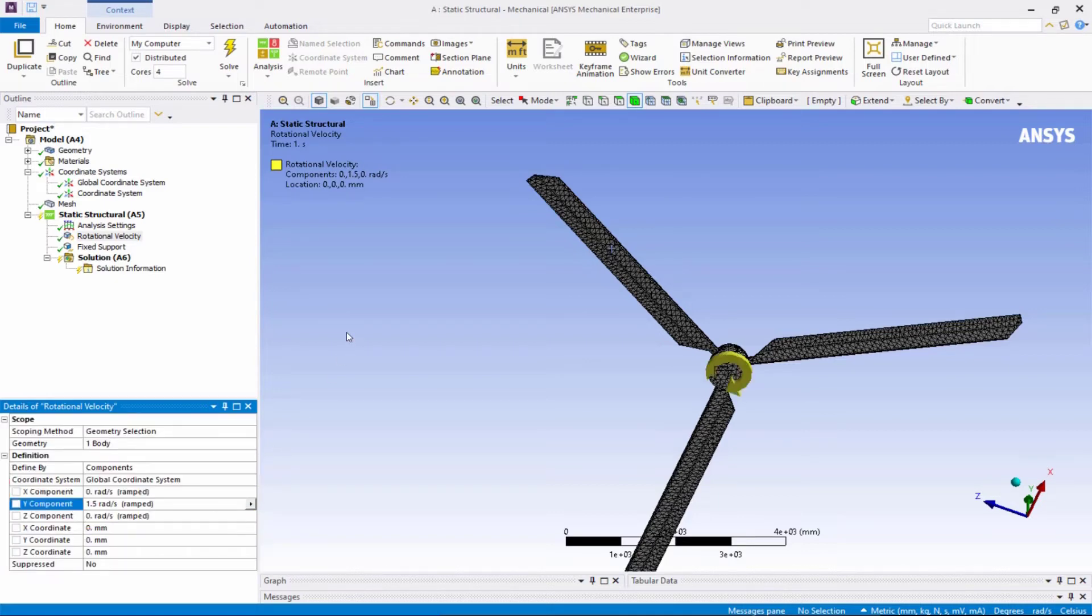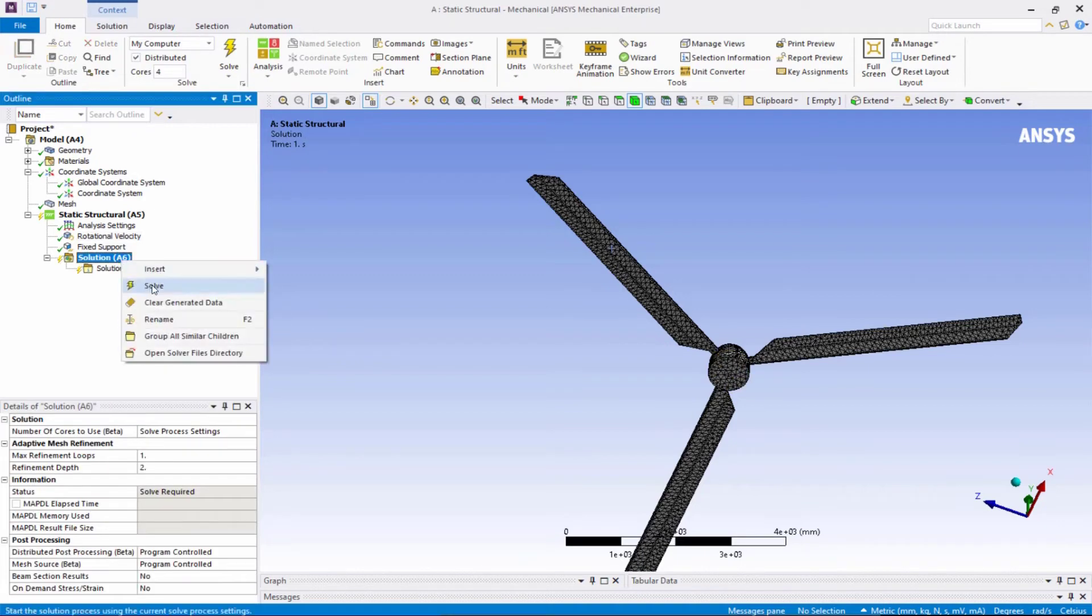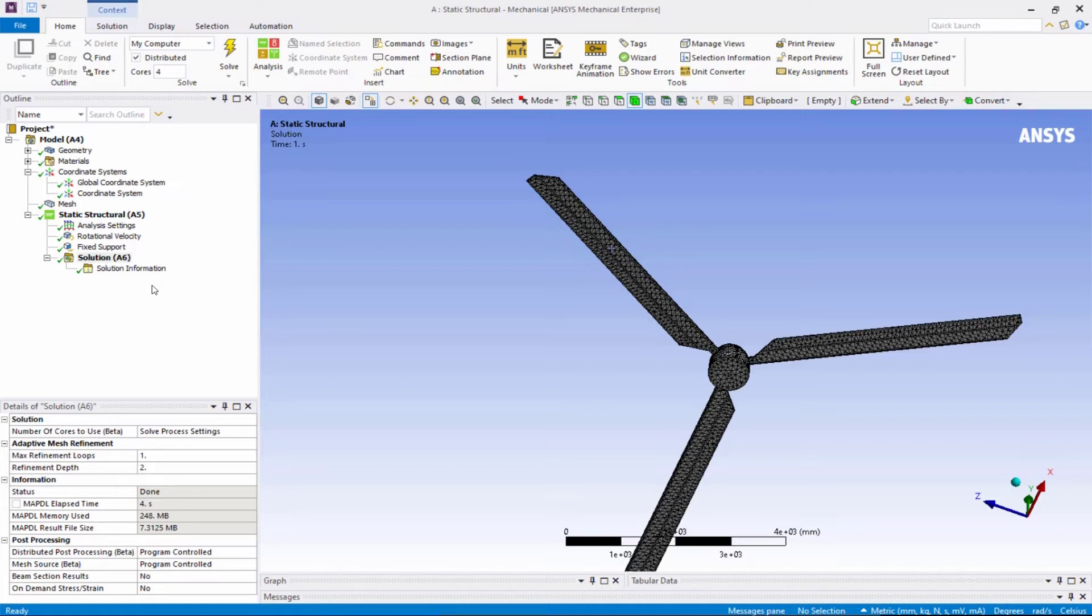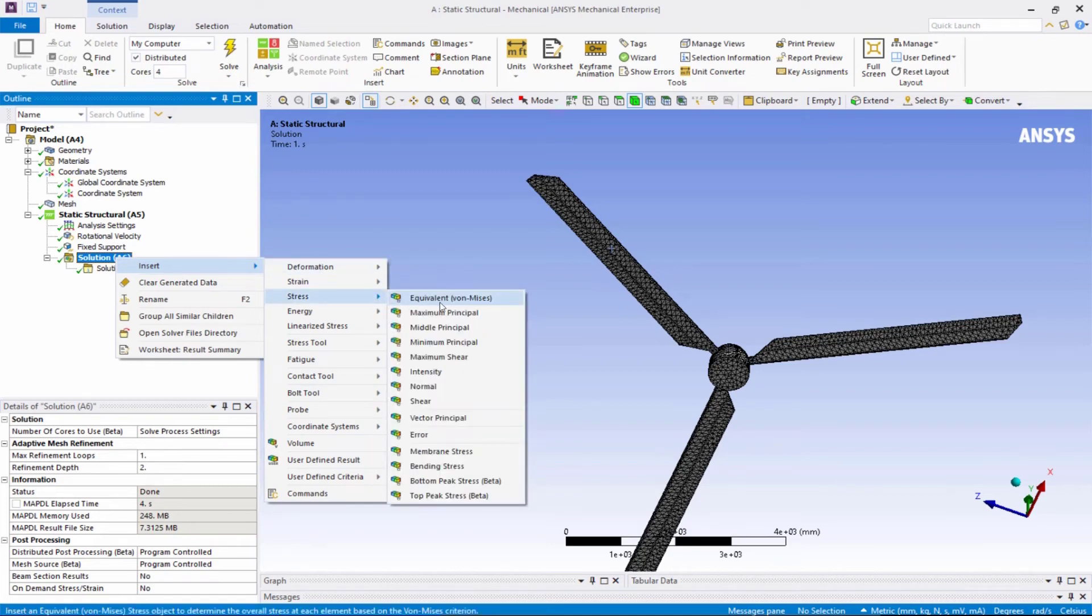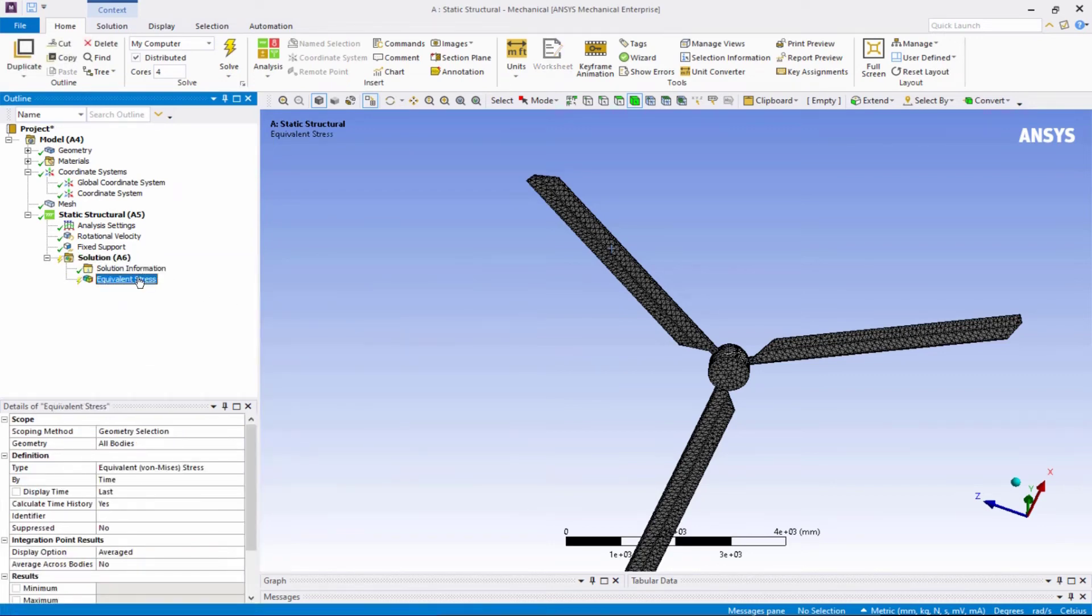Now we are ready to solve the model. Right-click on Solution and Solve. If the solution is done, let's first check the stresses in the blade. Right-click on the solution. Insert stresses equivalent. Evaluate the results to view the stresses that developed on the blade.